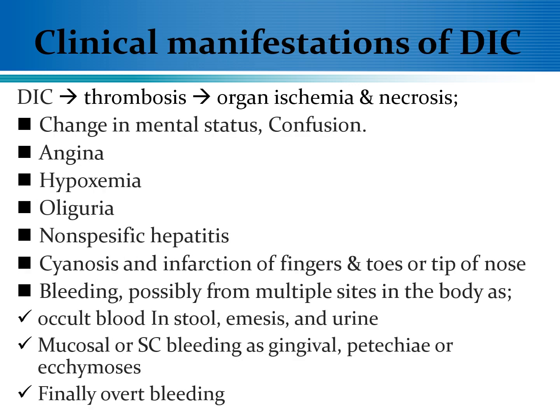Regarding the clinical manifestation of patients with DIC, as mentioned before, there is microthrombi formation which results in organ ischemia and necrosis. The consequences of ischemia and necrosis will vary according to the organ affected. For cerebral circulation, it will manifest as change in mental status and confusion. For coronary circulation, it will manifest as angina. Also there will be hypoxemia, oliguria due to involvement of renal circulation, non-specific hepatitis due to involvement of the liver, and cyanosis with infarction of the fingers, toes, or tip of the nose due to involvement of peripheral circulation.